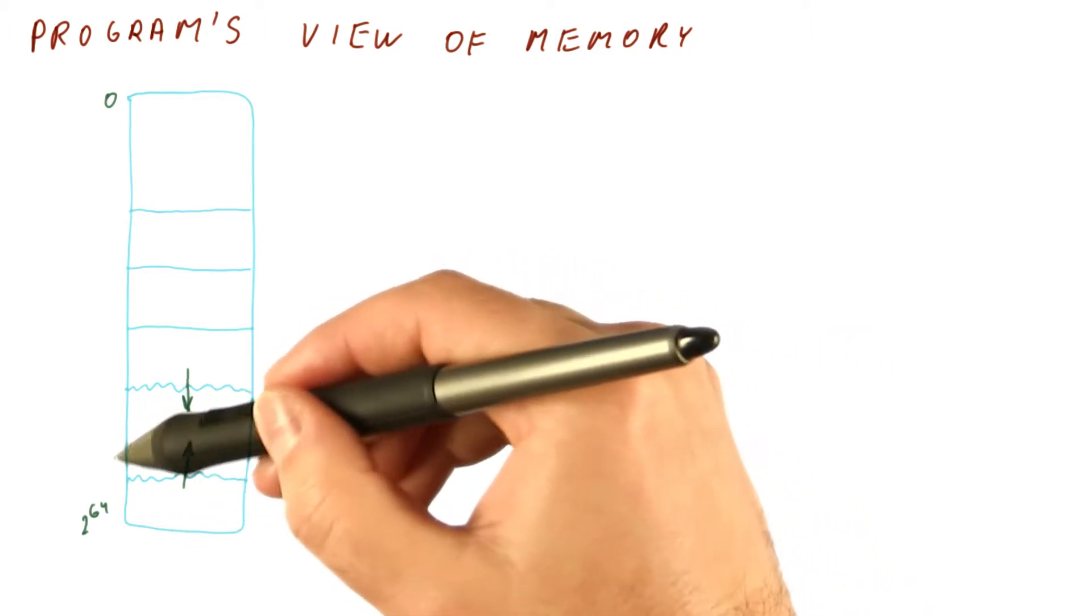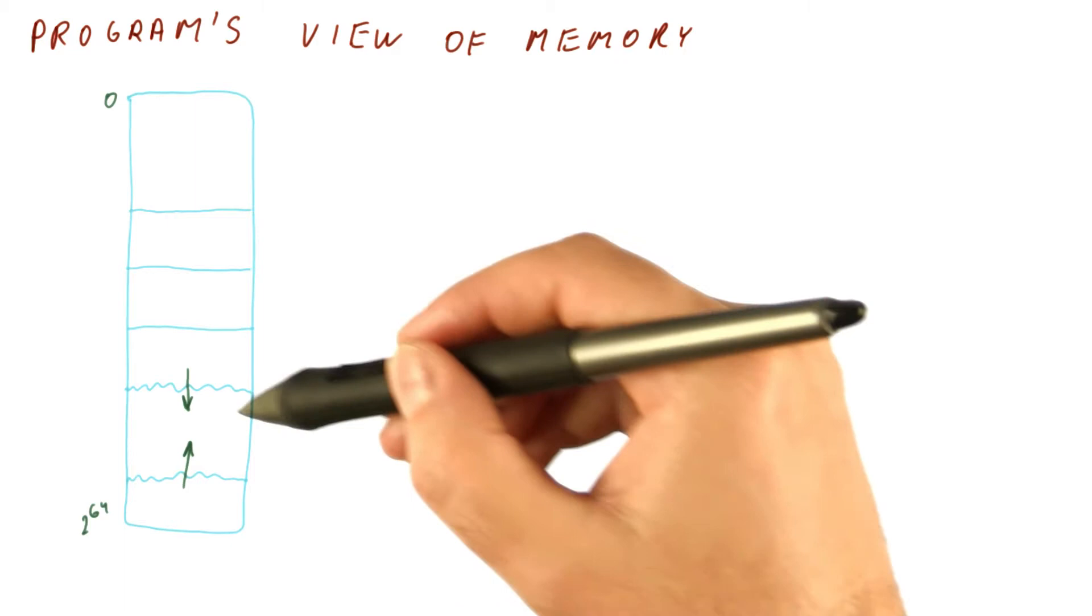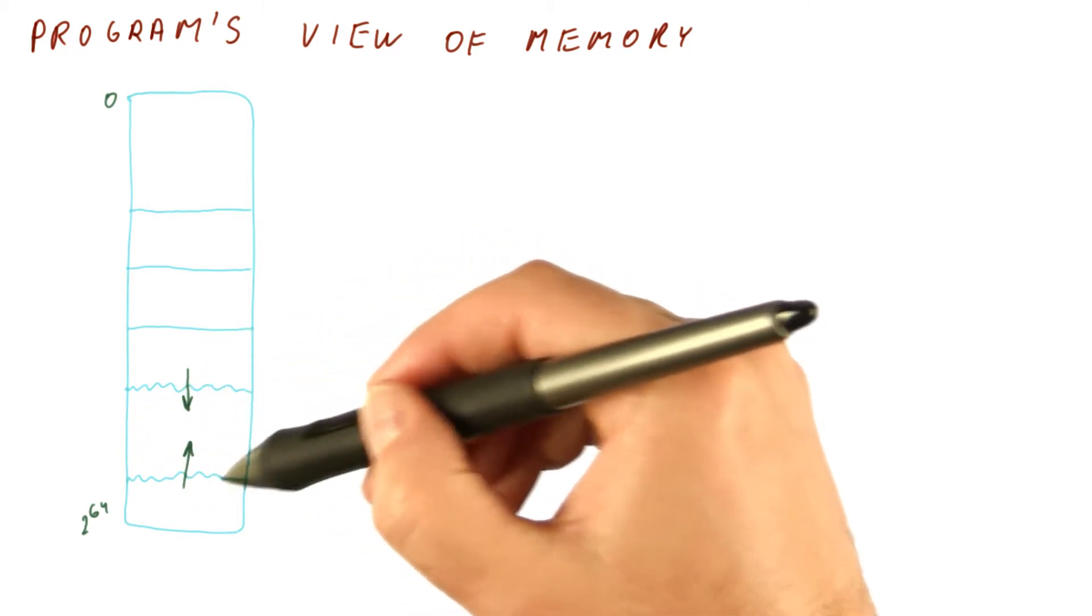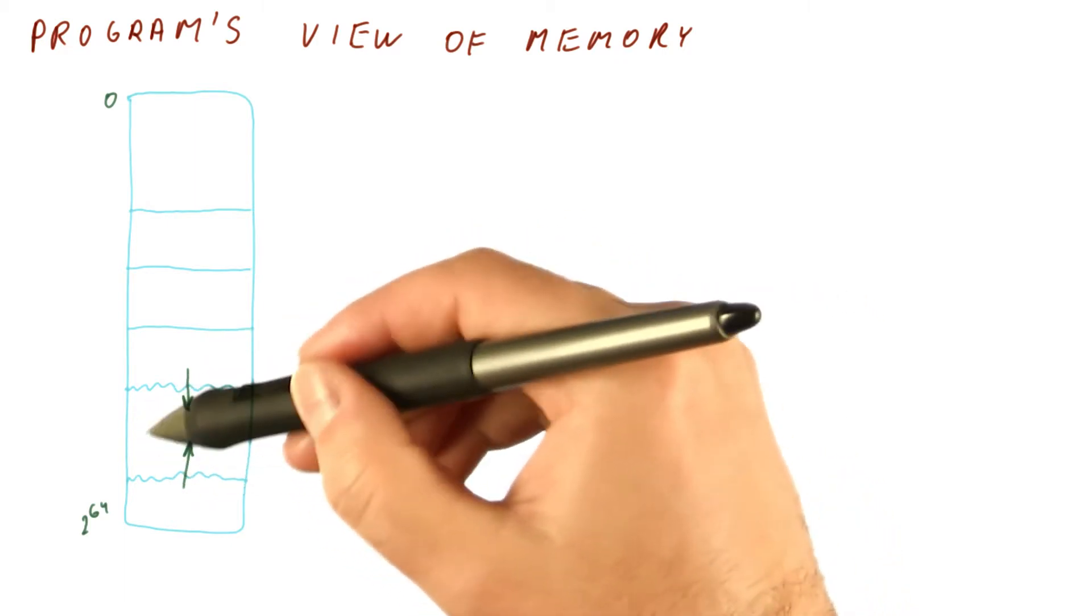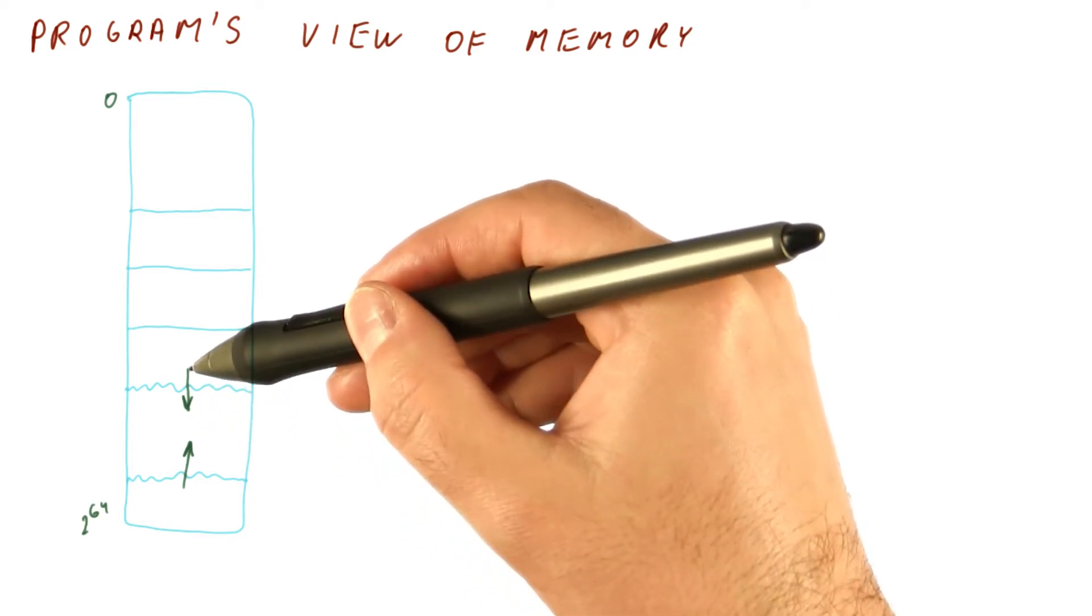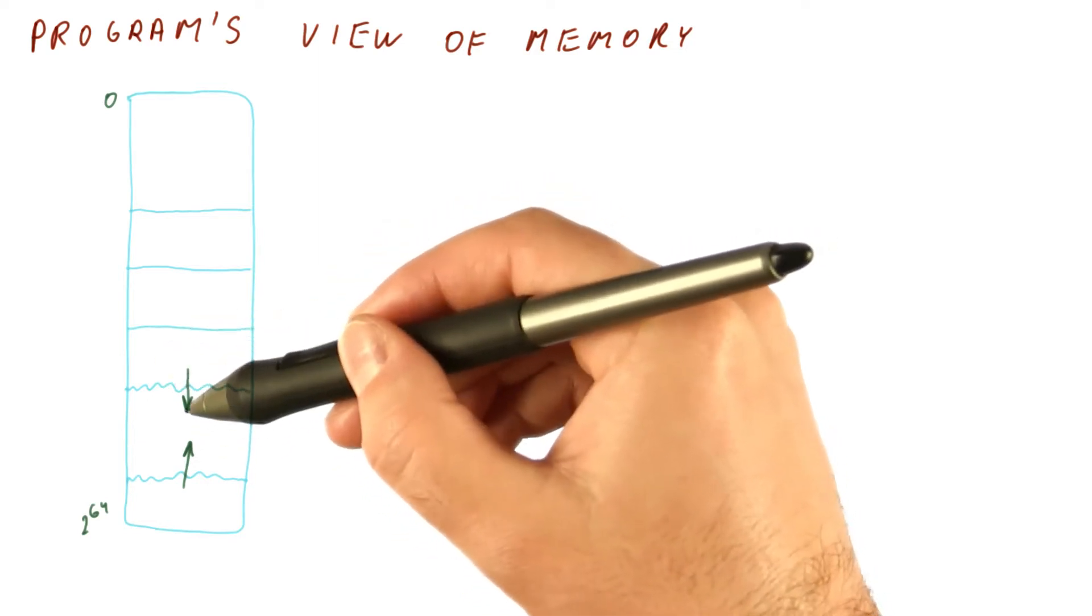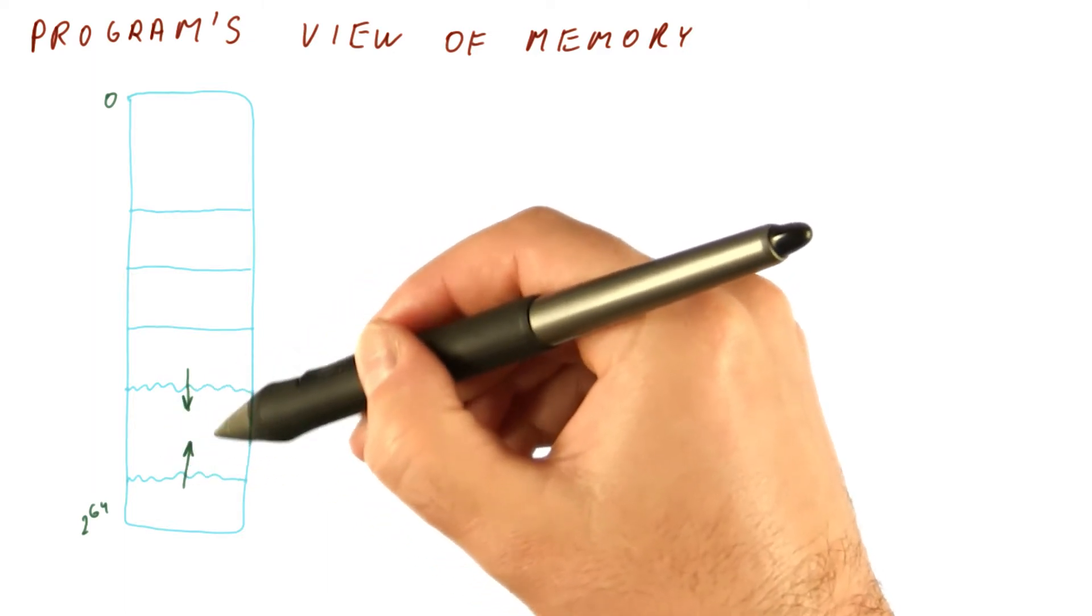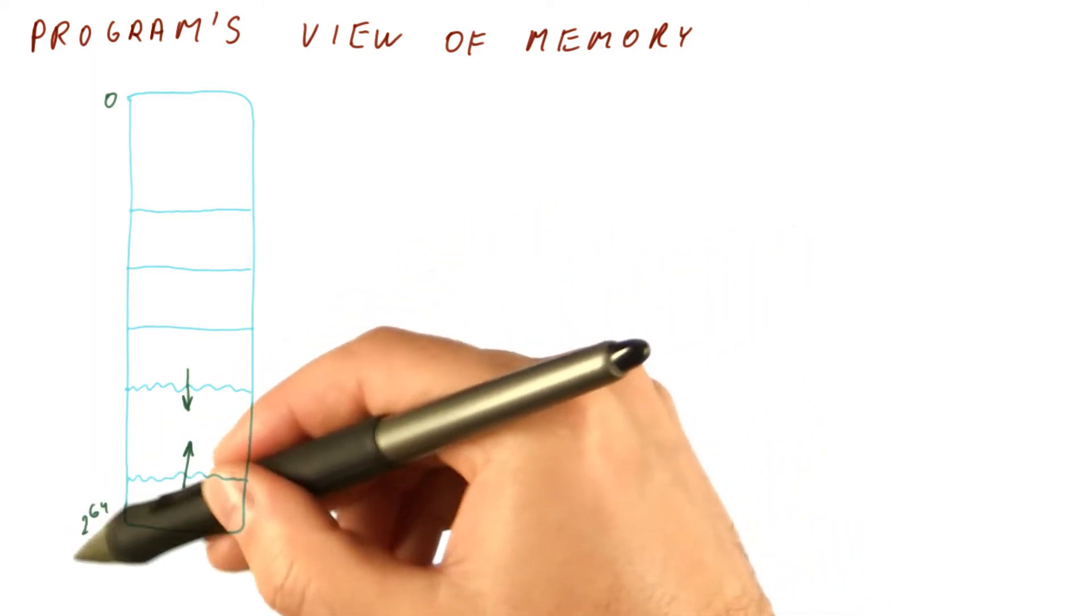And there is an enormous region in the middle between the heap and the stack that the program will never access unless the heap grows that way. But the heap is usually small relative to how much space we have here because it's a huge, huge amount of memory.